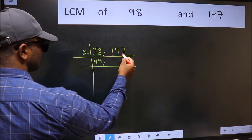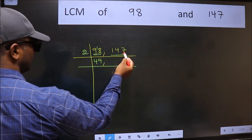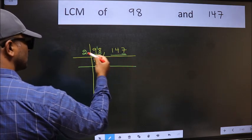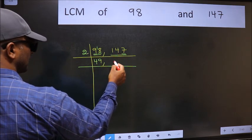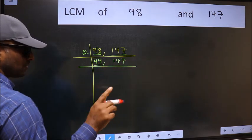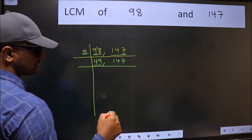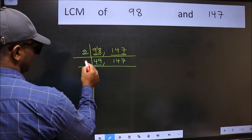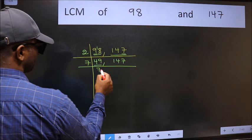The other number 147, last digit 7, not even. So this number is not divisible by 2, so you write it down as it is. Now here we have 49. Always remember 7 times 7 is 49.